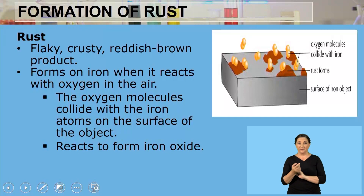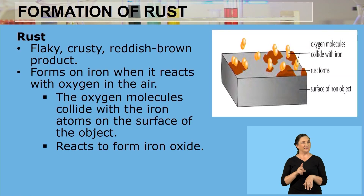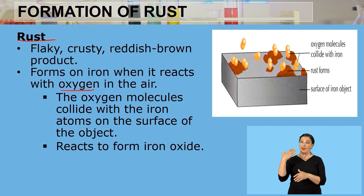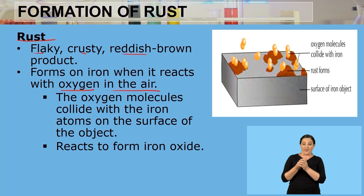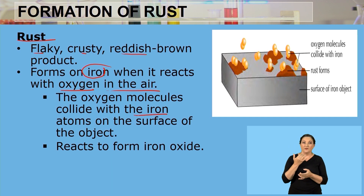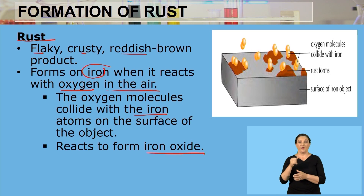Let's break down the process of rust and see how it happens. Rust is a flaky, crusty, reddish-brown product. It forms on iron when iron reacts with oxygen in the air. The oxygen molecules in the air collide with the iron atoms on the surface of the object, and that reaction produces iron oxide.